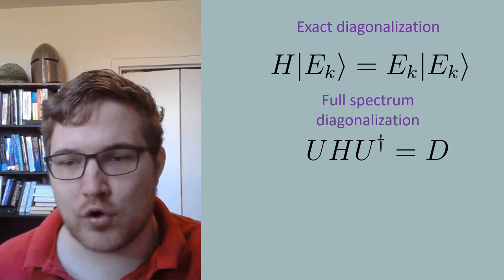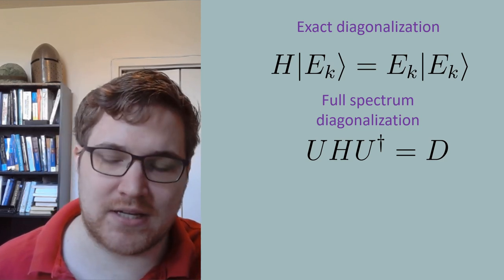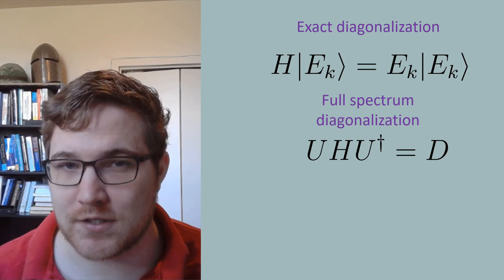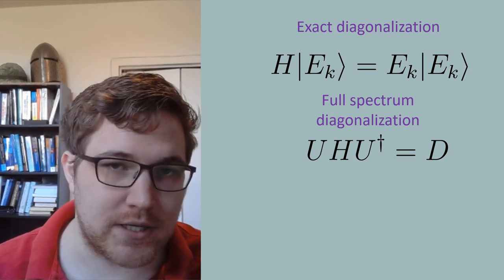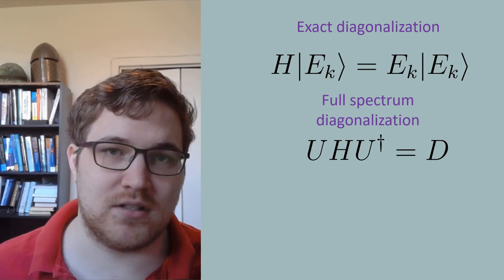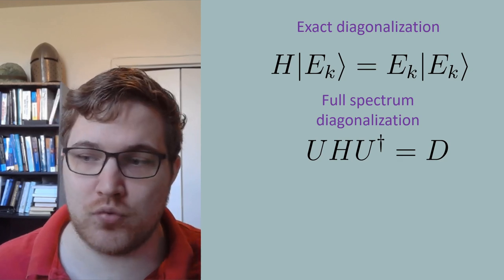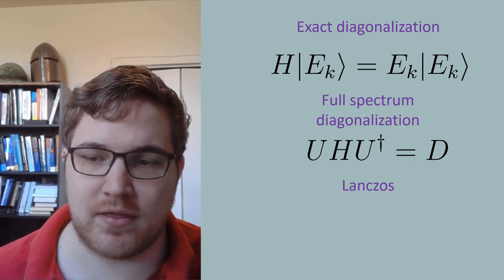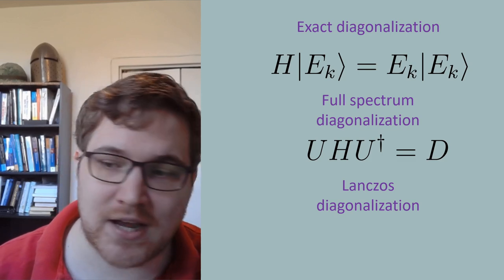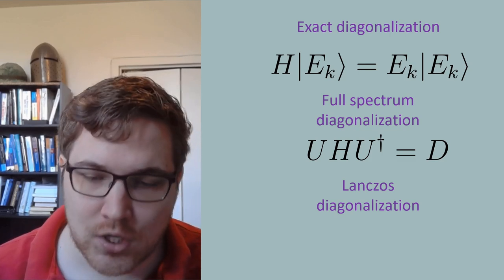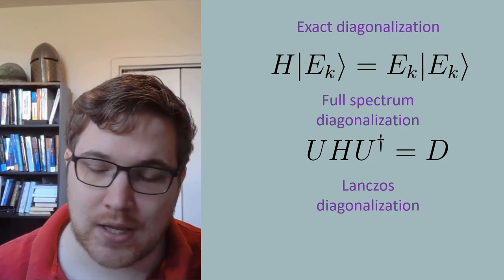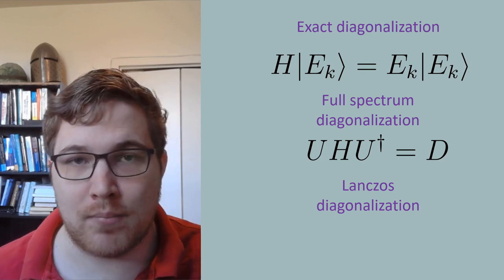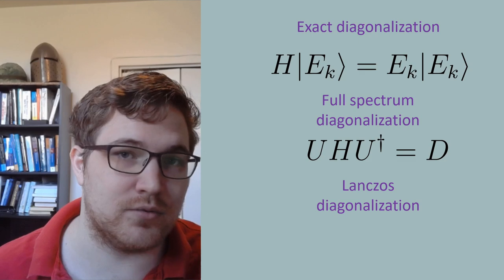One can go one step further and use block diagonalization techniques, reaching system sizes of around maybe 24 interacting spins. If we only wanted to study the ground state, we can more or less double this accomplishment of 24 spins by using a clever projection method. There is an algorithm called the Lanczos method of finding the ground state, which is a type of Krylov space method. So let's take a quick look at block diagonalization, then discuss the basic idea of Krylov spaces, and then briefly we'll describe how these things relate to the Lanczos algorithm.